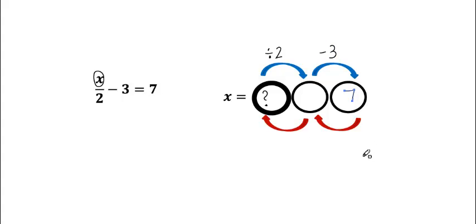To solve using backtracking, now that we have it set up, we just need to backtrack. The opposite of subtracting 3 is adding 3. So we're going to take 7 plus 3, and that's going to give us 10.